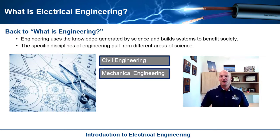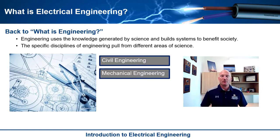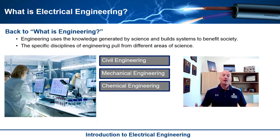Mechanical engineering draws from the fields of thermodynamics and classical mechanics. Basically, what mechanical engineers do is build machines that automate things for us — everything from automobiles to home appliances to the housings of your smartphone. They build the physical things that are in our modern world.